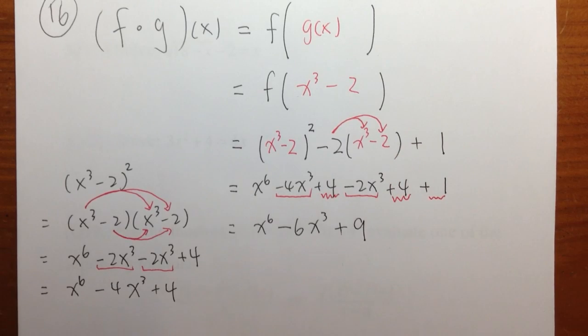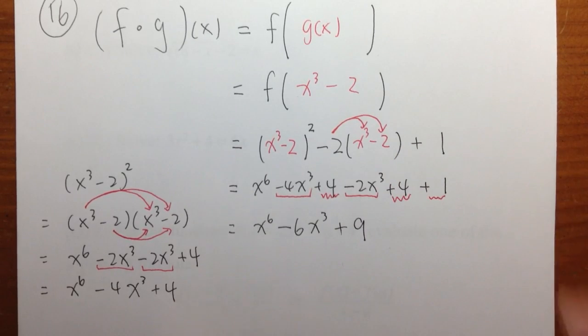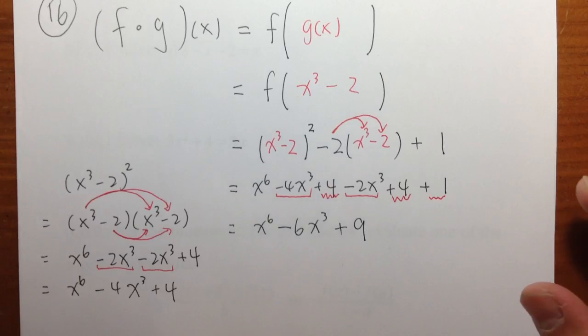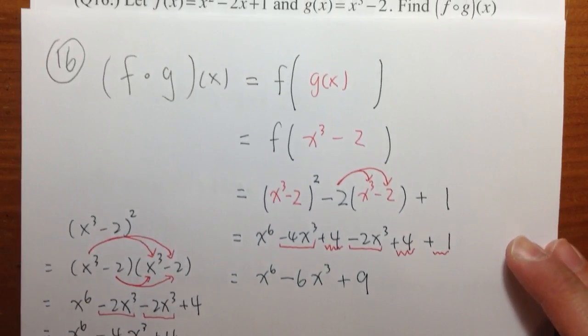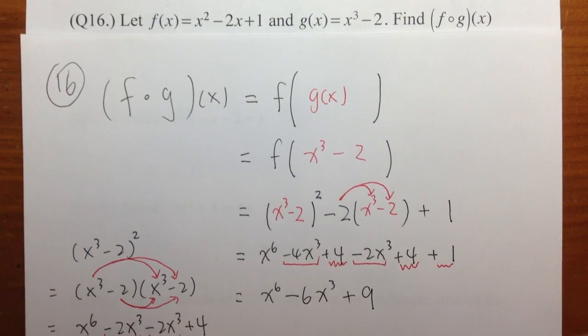So I think this is it — the final answer is x to the sixth minus six x to the third power, plus nine. I don't think we need to go any further. That's it.